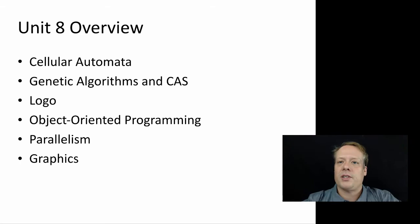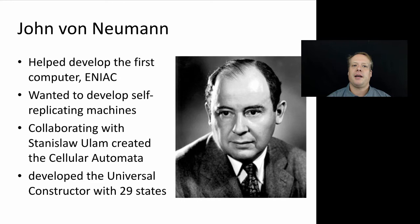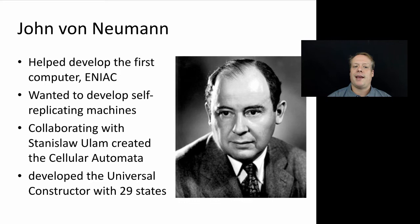The first story we're going to talk about is the development of cellular automata. We've alluded to cellular automata several times in this class, but haven't actually talked about where it came from. The developer of cellular automata, along with a man named Stanislaw Ulam, was John von Neumann. You may have heard the name von Neumann before — he helped develop the first computer, the ENIAC, and in many ways in the 1940s invented the modern computer architecture we still use to this day. Von Neumann became very interested in the idea of developing self-replicating machines.